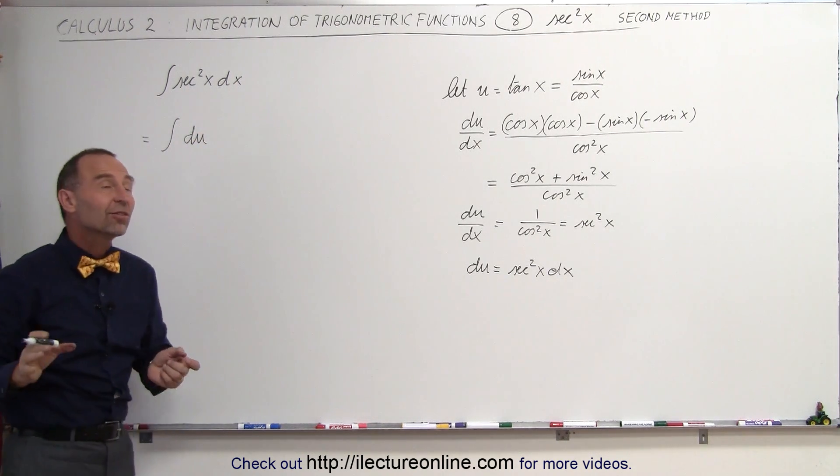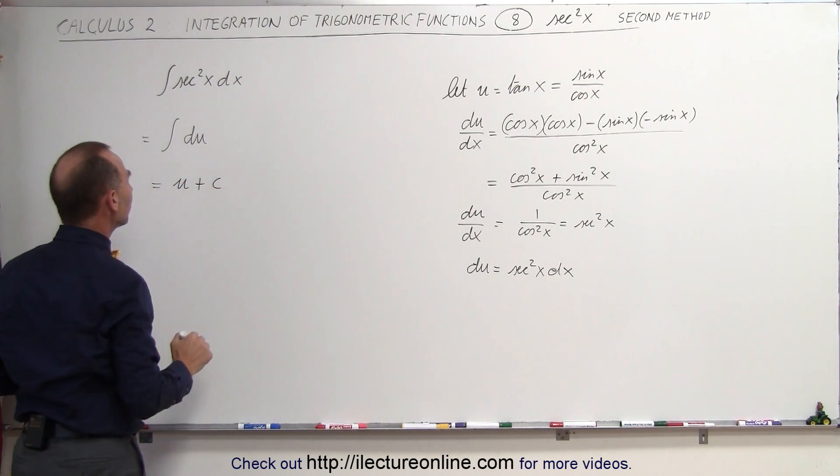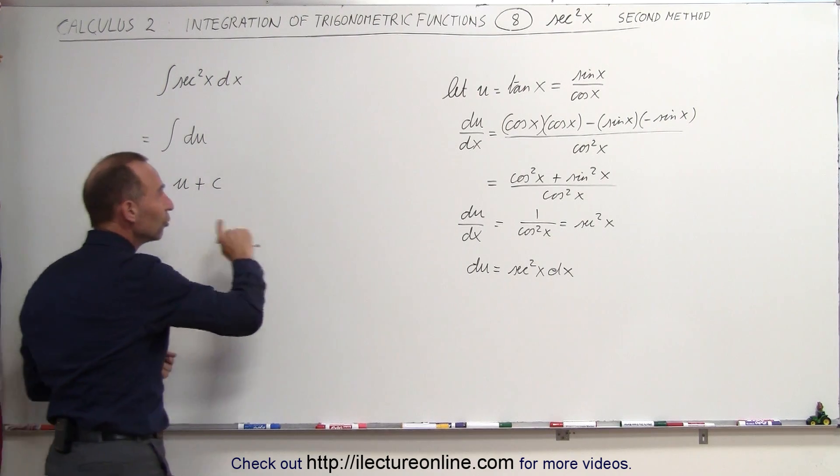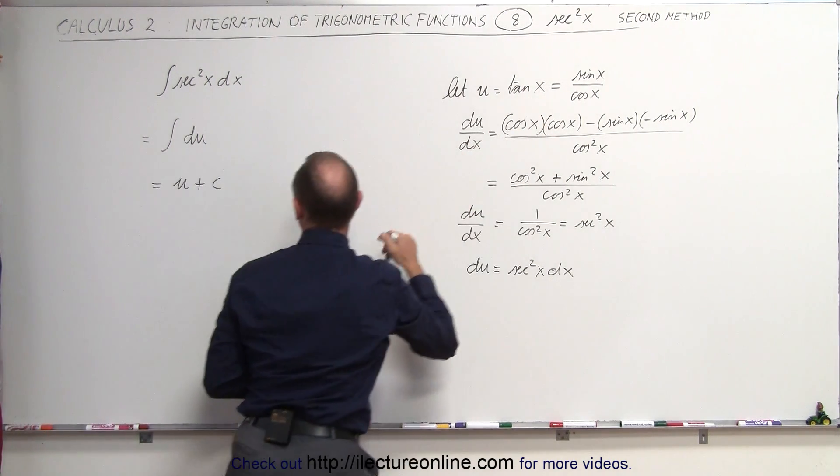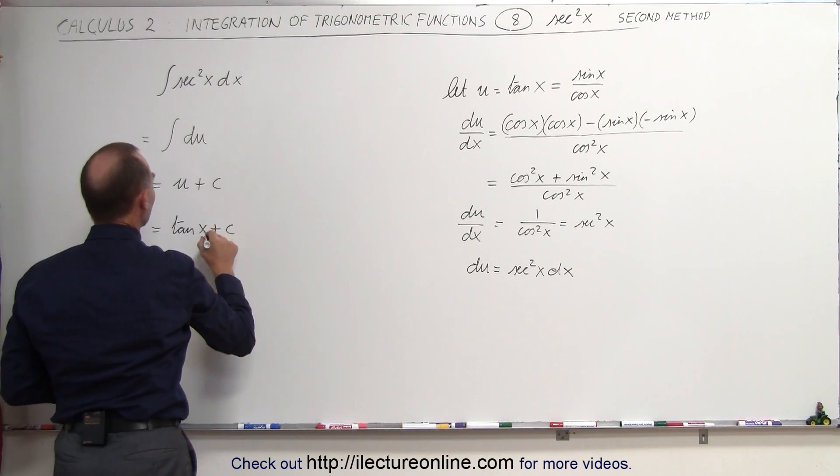And of course, that's the easiest integral in the world. The integral of du is simply equal to u plus a constant of integration. And then u, since u was equal to the tangent of x, I can then say this is equal to the tangent of x plus the constant of integration.